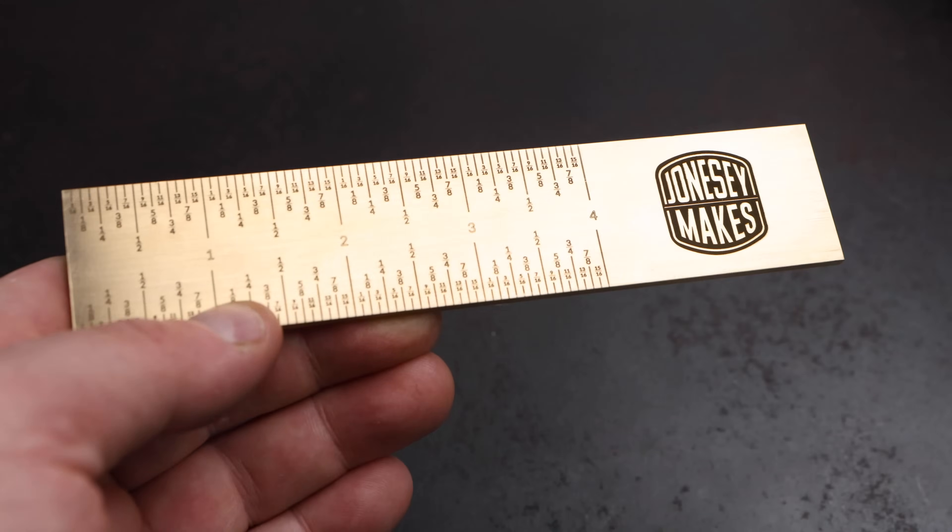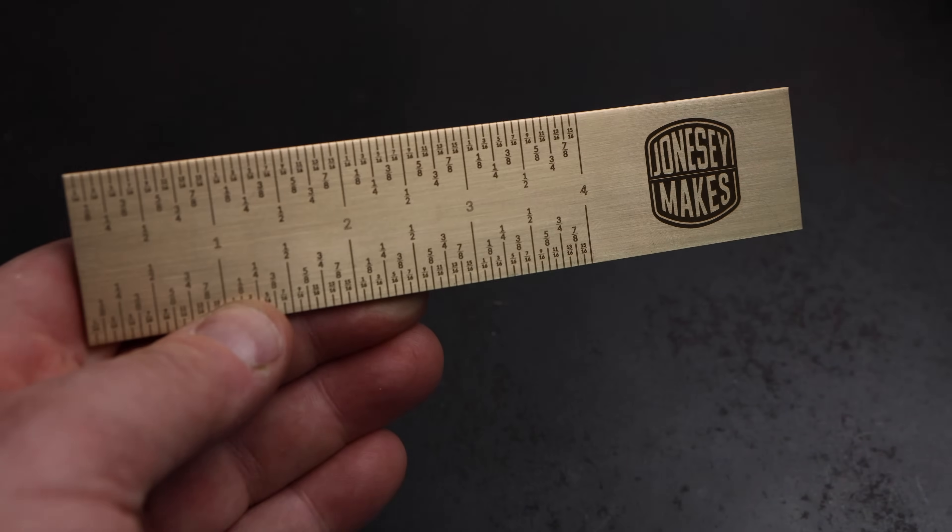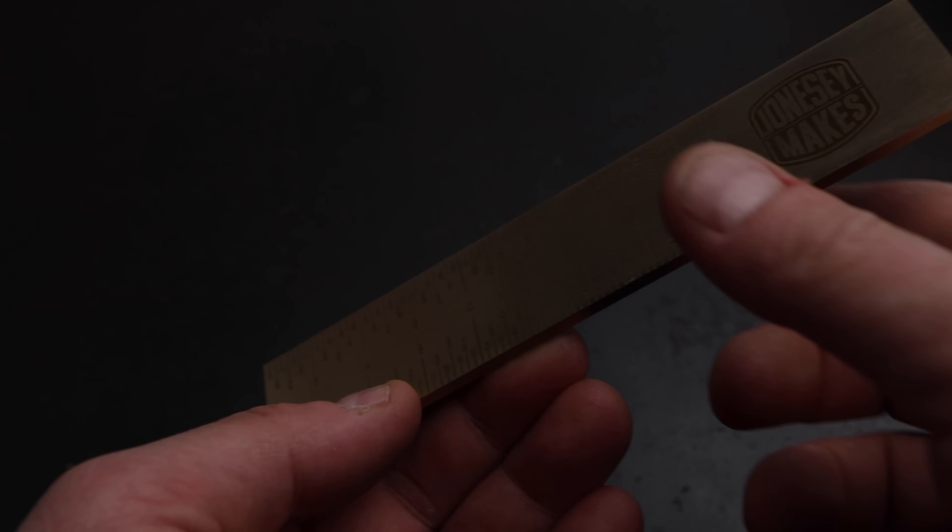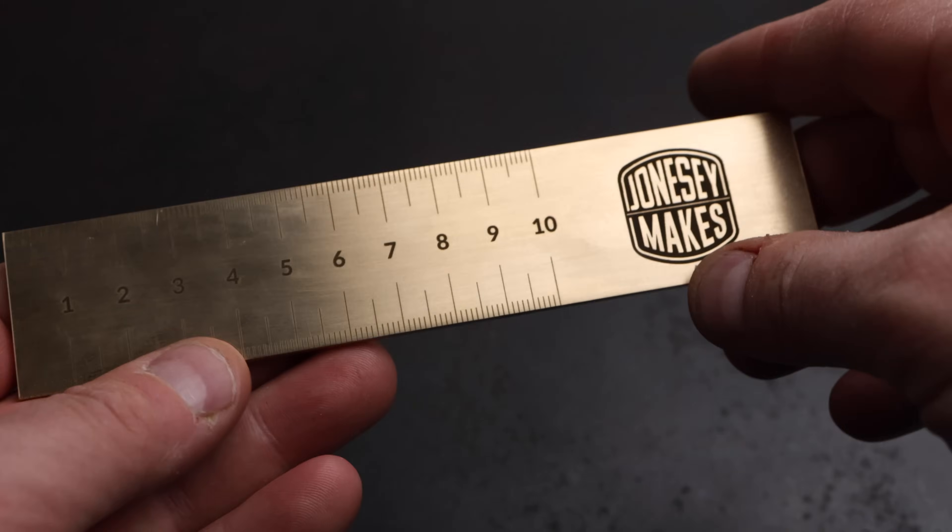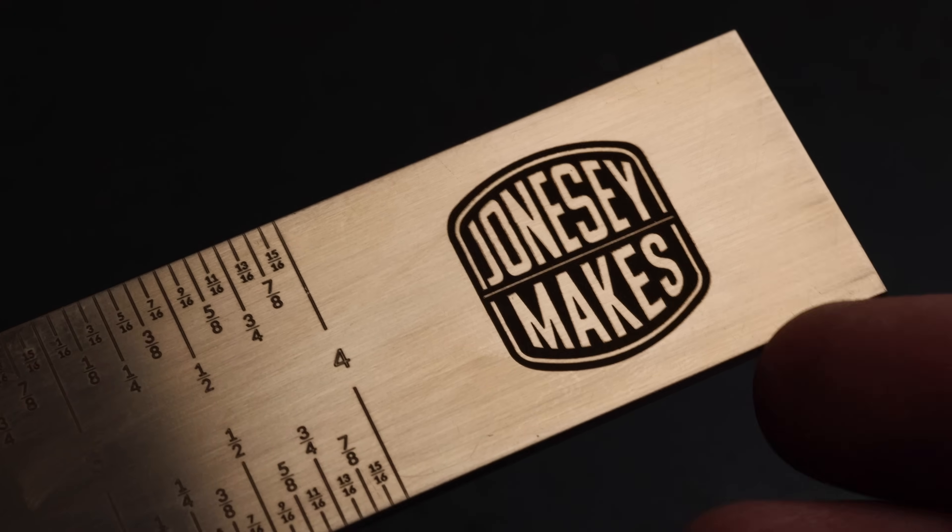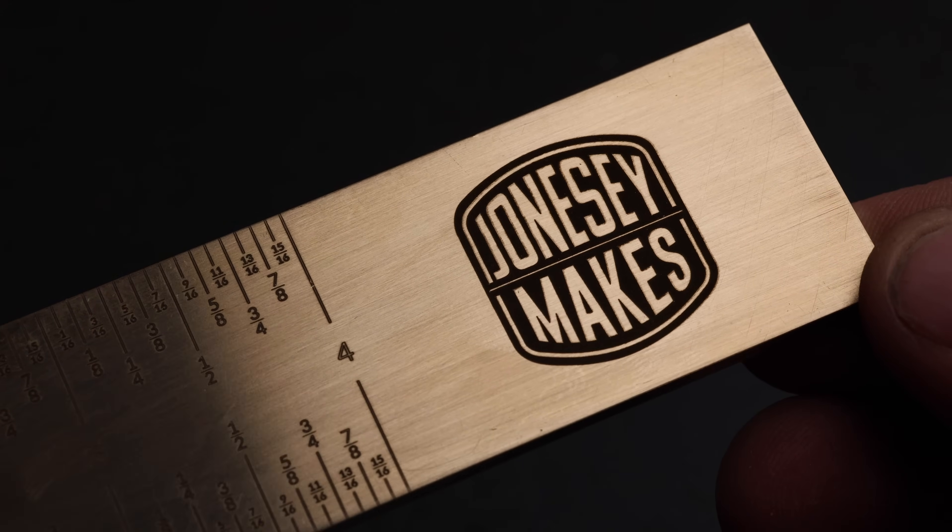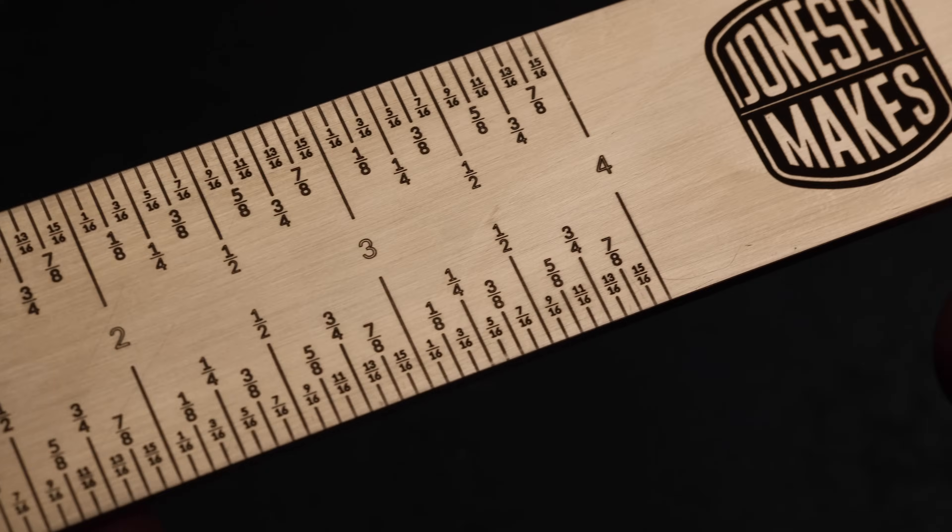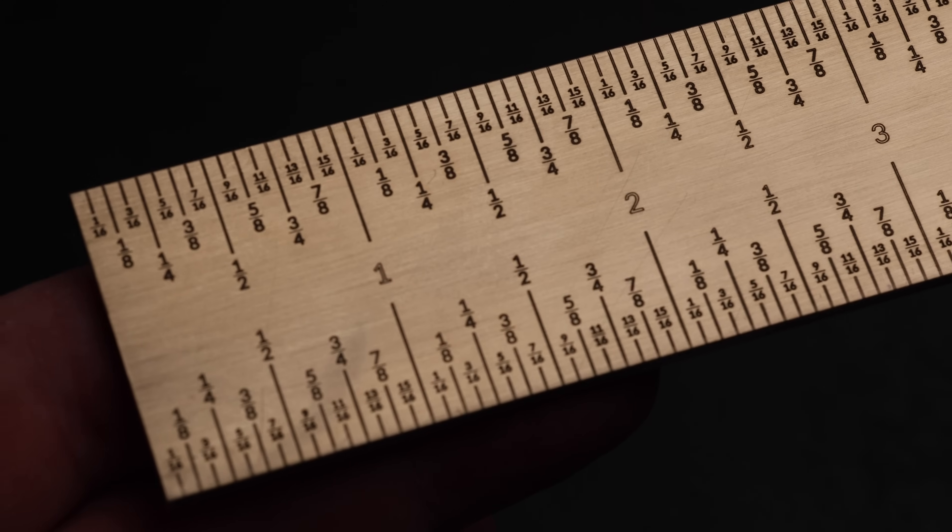And here is our finished ruler. We have our imperial scale on one side of the ruler and the metric scale on the other. And once again, I'm super impressed. The level of detail and accuracy that this laser is able to produce is far beyond anything I could achieve with manual methods.